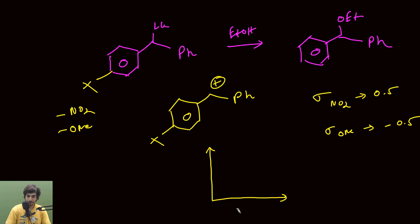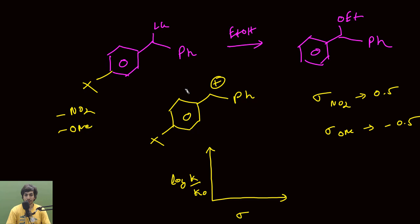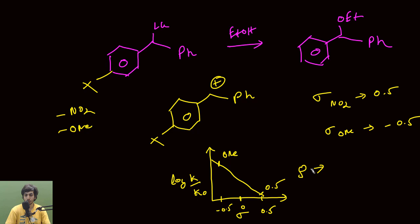What Hammett predicted was that if we plot a graph between the sigma value and log(k/k₀), that graph will be a straight line. When we plot this graph for the solvolysis reaction, with sigma values from −0.5 to +0.5 on the x-axis and log(k/k₀) on the y-axis, what we find is a downward sloping linear graph. Methoxy lies at sigma = −0.5 and nitro at sigma = +0.5. The slope of this graph gives the ρ value, and since it's downward facing, the slope is negative — coming out to be −5.